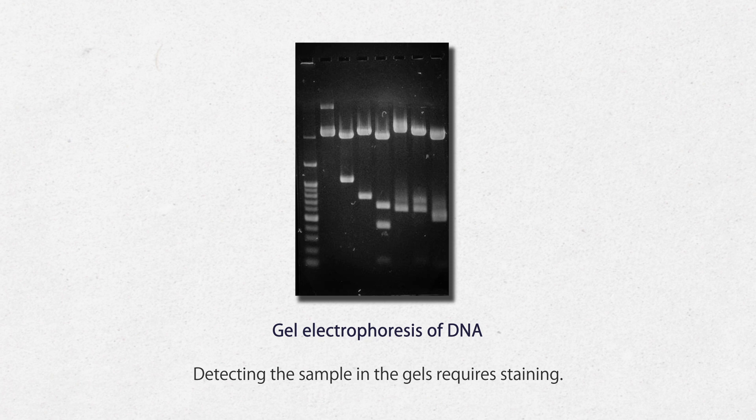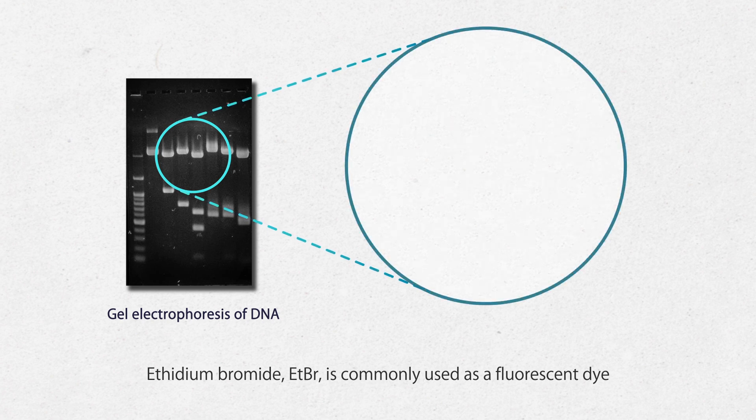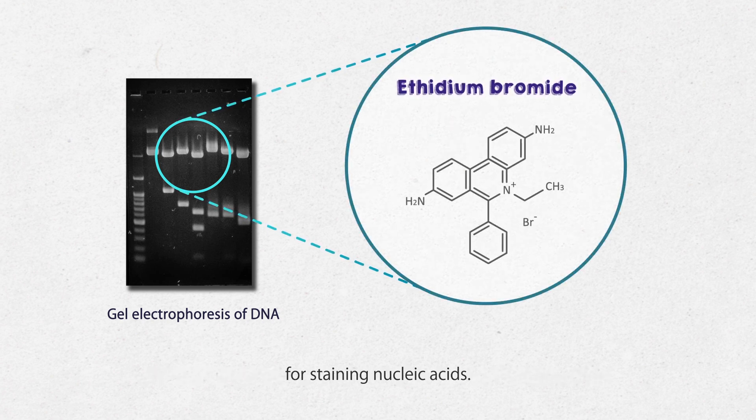Detecting the sample in gels requires staining. Ethidium bromide (EtBr) is commonly used as a fluorescent dye for staining nucleic acids.